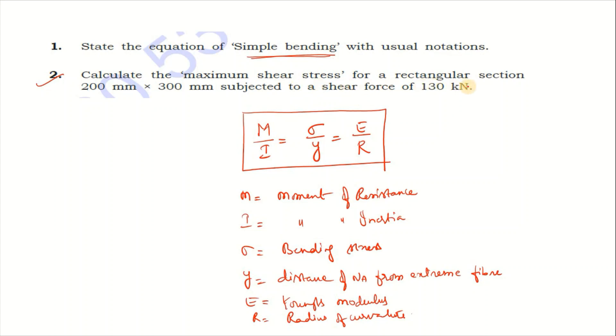Second question: calculate the maximum shear stress for a rectangular section 200mm × 300mm subjected to shear force 130 kN. Maximum shear stress formula for rectangular section is 3 by 2 tau average, which equals shear force by area.